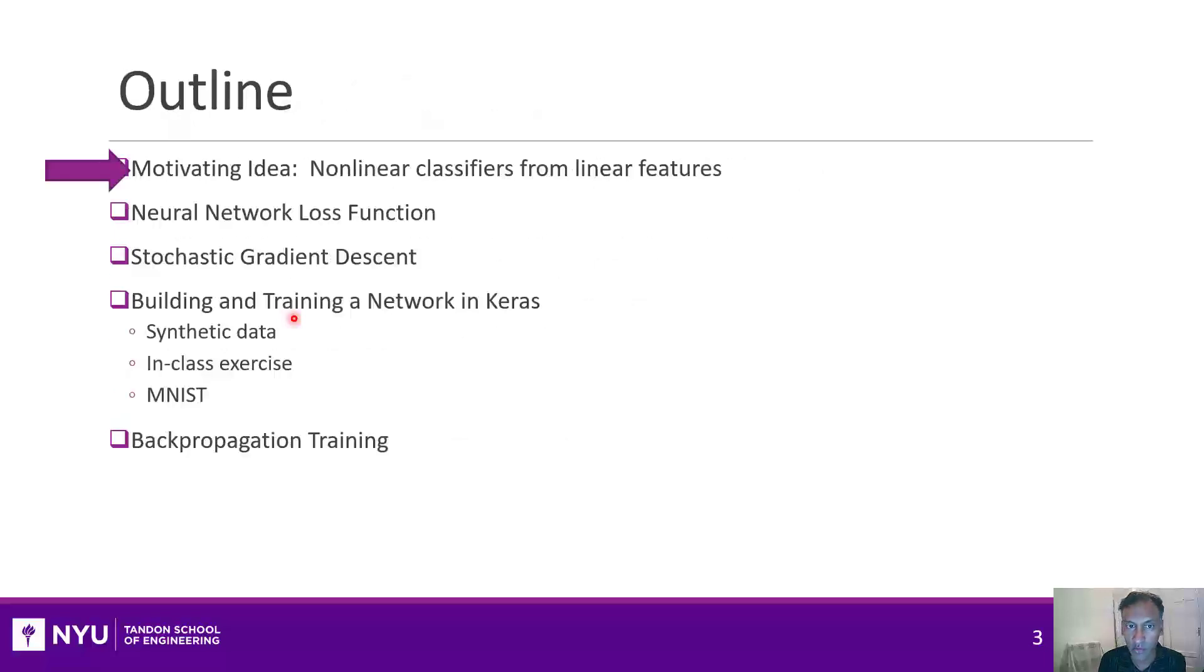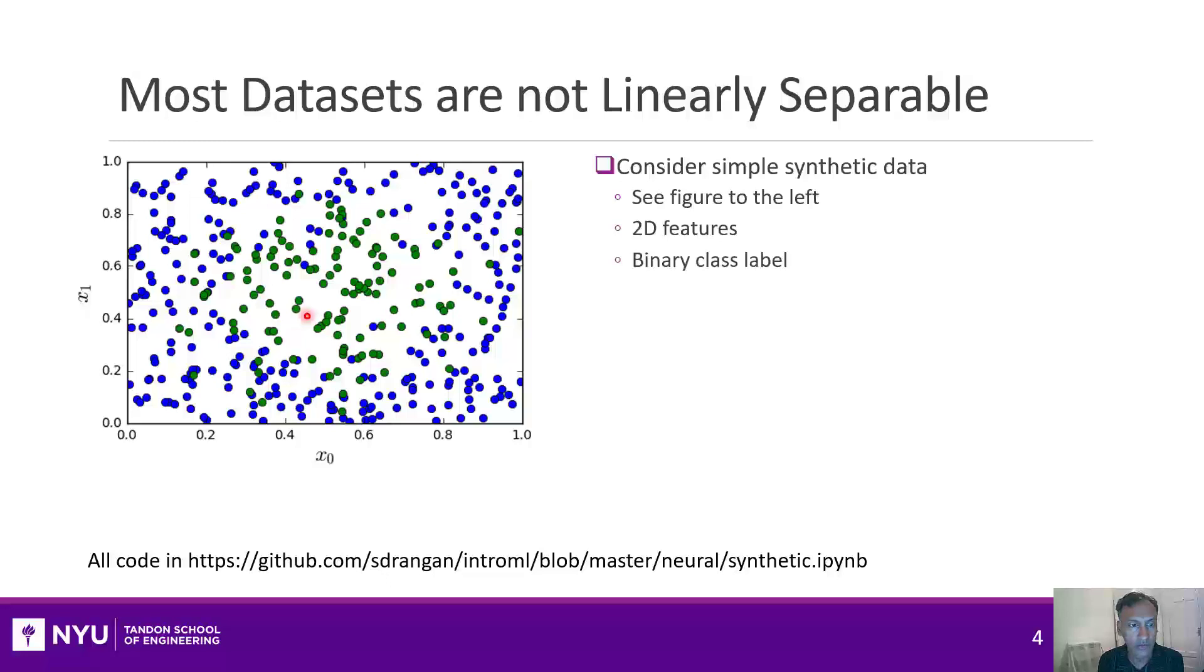Let's start with why you might be interested in neural networks by looking at a simple synthetic data example. Suppose that we had data like this. In this case we had data which had two features, x0 and x1. So each point is a point in this space and it's a binary classification problem. We have some green samples and some blue samples, and somehow we want to build a classifier to learn how to classify data from this training data set. Obviously this data set is not linearly separable.